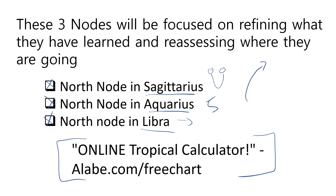We all go through these peaks and valleys, much like the Earth. Certain points are high points in our life marked by high activity — and then there are low points marked by more introspection, meditation, and understanding who we are. If you are a Sagittarius, Aquarius, or Libra North Node, you're going through this kind of understanding of self and rising above it, preparing for the next cycle — because the high points are coming next.